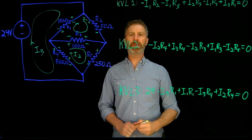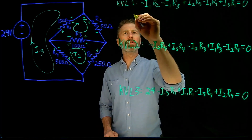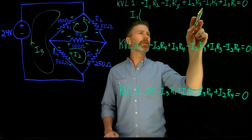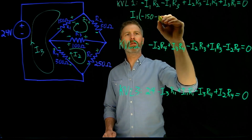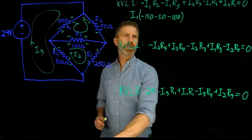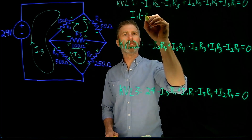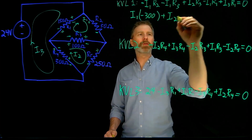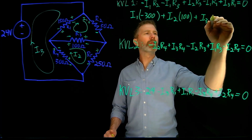The next step is to group all the terms in each expression by the unknowns I1, I2, and I3. For loop one: I1 has minus R2, minus R3, minus R1 — that's minus 50, minus 100, minus 150, giving a coefficient of minus 300. Plus I2 has just R3, which is 100. Plus I3 has just R1, which is 150. That all equals zero.